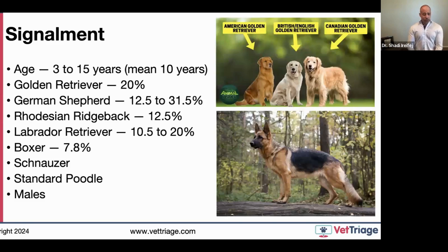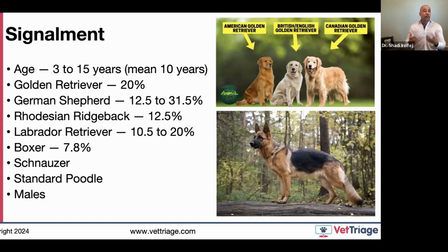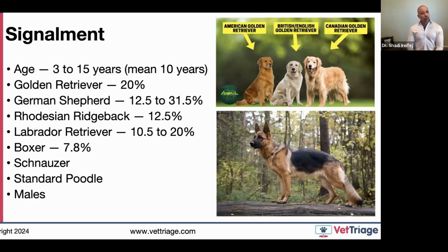Regarding signalment: while there's a wide age range, the mean age is 10 years. When owners ask about anesthetic risk in older dogs, I explain that anesthetic risk is fairly equal across the board because this is typically a middle-aged to older dog disease. Golden retrievers and German shepherds are the primary breeds affected, but any large or extra-large breed can be affected, with a slight predisposition toward males.